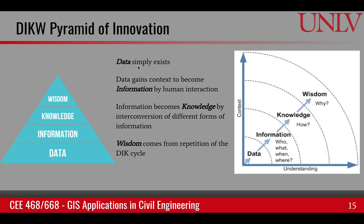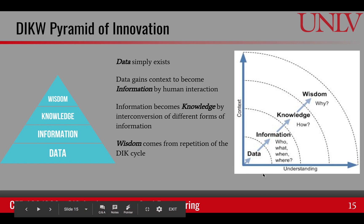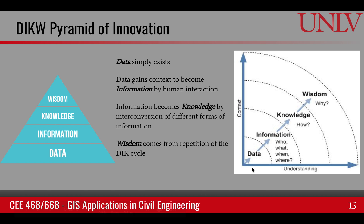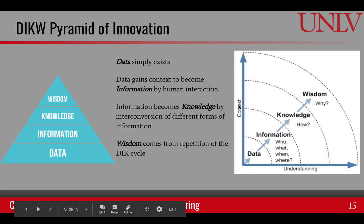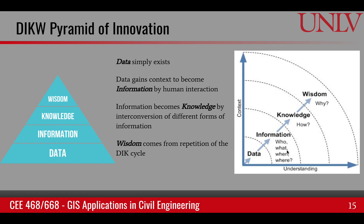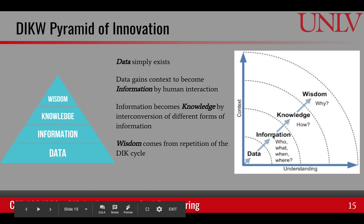Once data is put in a certain context for human consumption, it becomes information. Looking at this plot, the x-axis represents understanding and the y-axis represents context. Data sits where there is very little understanding and no context. As we increase context, it becomes information. Questions like who, what, when, and where convert data into information.